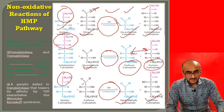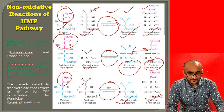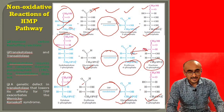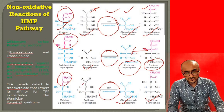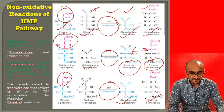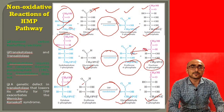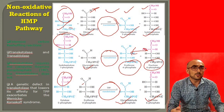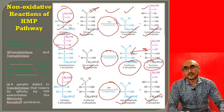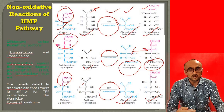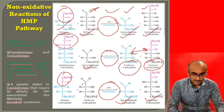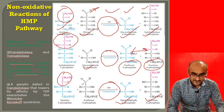If transketolase doesn't bind TPP effectively, these reactions do not proceed normally, leading to accumulation of substrates. As a result, a medical condition arises characterized by memory loss, ataxia, and neurological dysfunction — this condition is called Wernicke-Korsakoff syndrome.